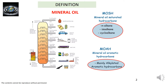When we talk about mineral oil, we refer to a product generated from petroleum composed mainly by two fractions: MOSH, mineral oil saturated hydrocarbons, composed by several subclasses — normal, isoalkanes, and cycloalkanes — and MOAH, mineral oil aromatic hydrocarbons, mainly composed by alkylated aromatic hydrocarbons.